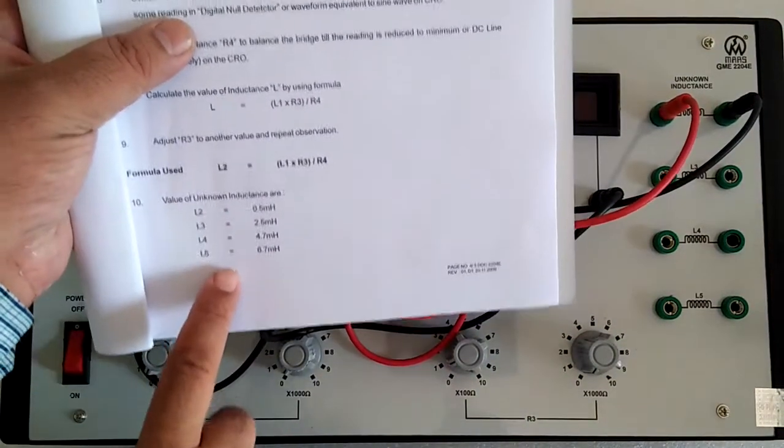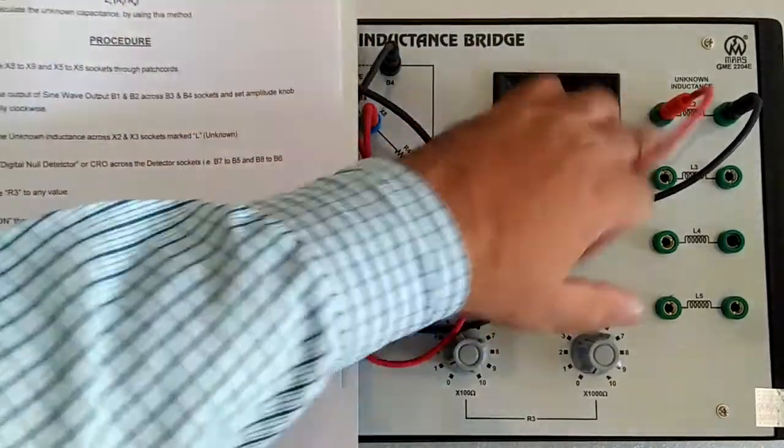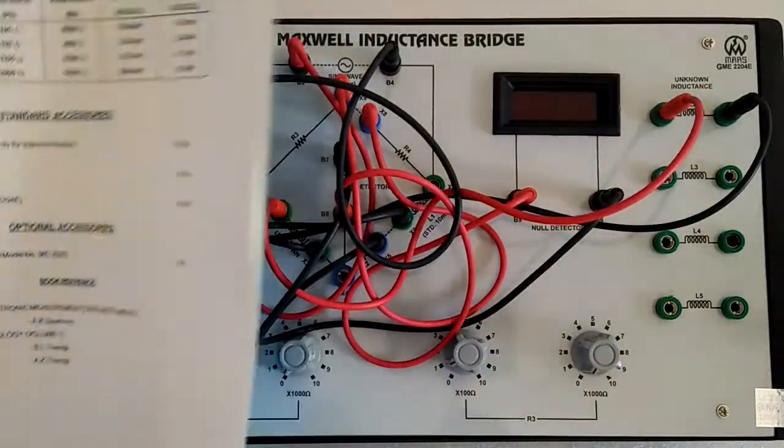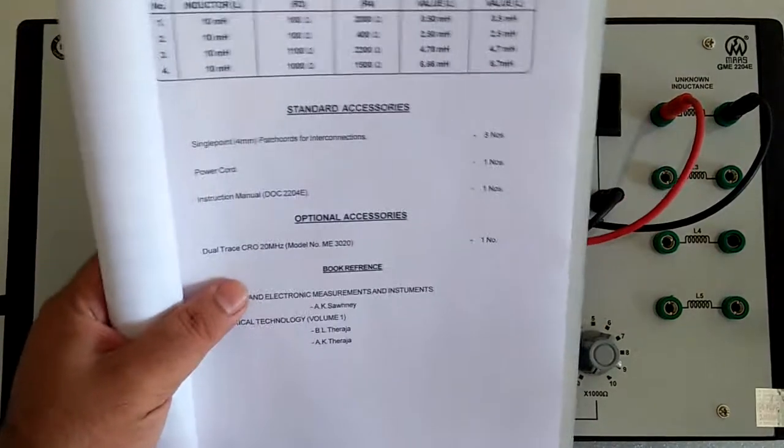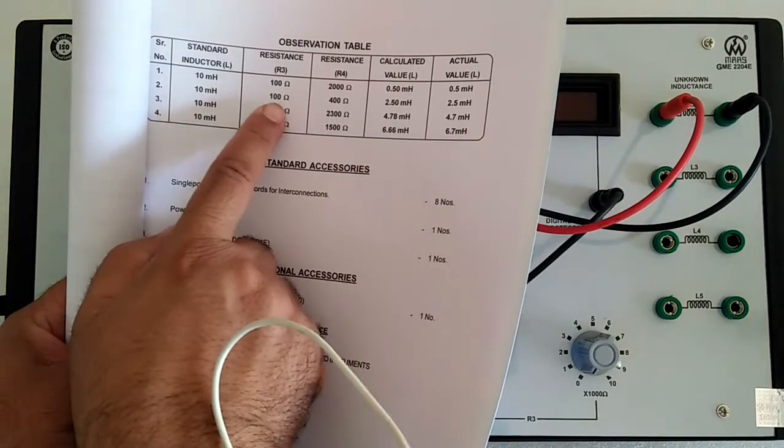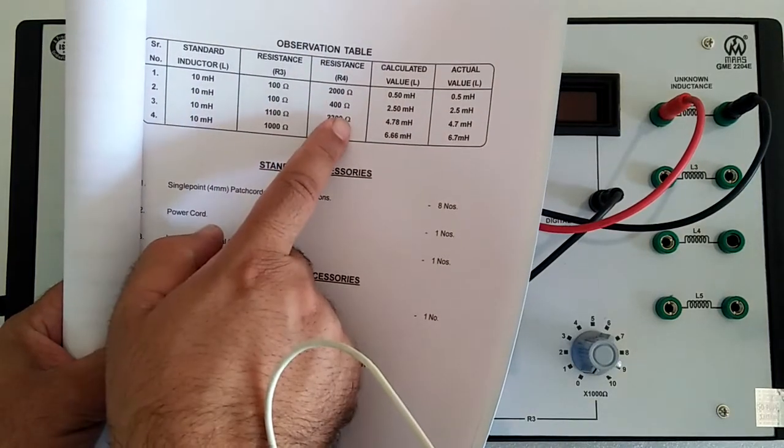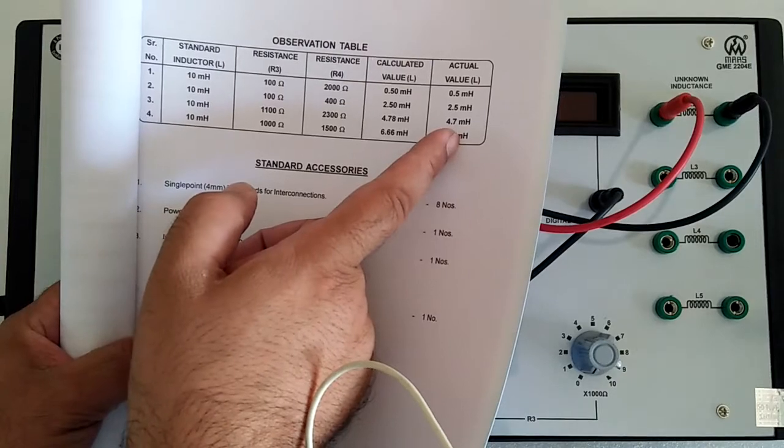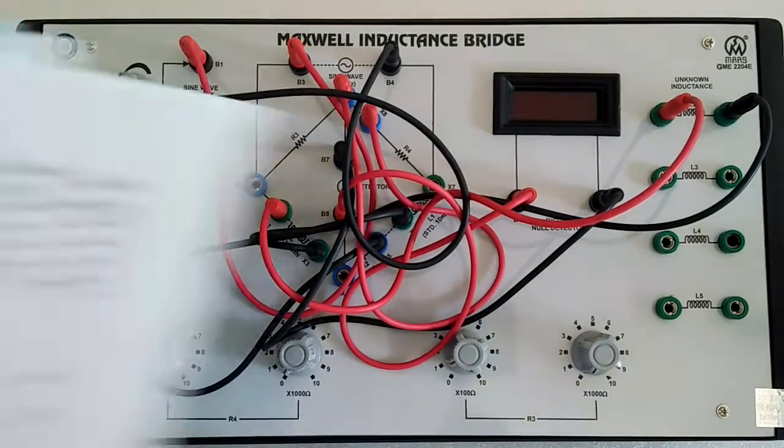Here is the unknown inductance value. These are the unknown inductances. This is the observation table. Here are the standard values: resistance R3, resistance R4, and the calculated and actual values. Now switch on the instrument.